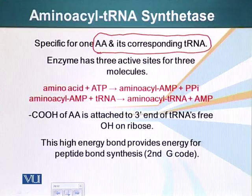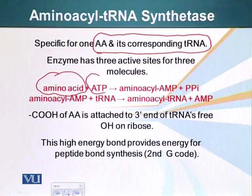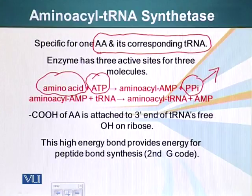The enzyme has three active sites for three molecules. It binds a specific amino acid and an ATP molecule. It then catalyzes a reaction in which a pyrophosphate molecule is released, which we know releases a huge amount of energy. Here, an amino acid and AMP bond is formed. This is a very high energy bond.